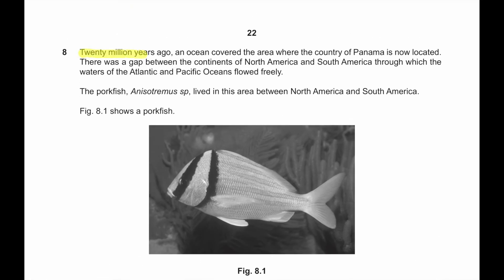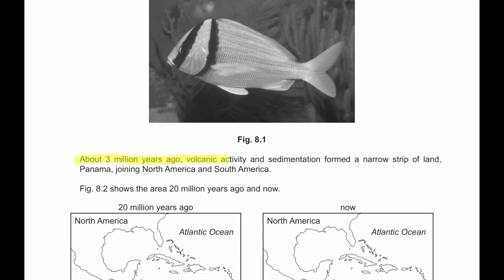Question number 8: About 20 million years ago, an ocean covered the area where the country of Panama is now located. There was a gap between the continents of North America and South America, through which the waters of the Atlantic and Pacific Ocean flowed freely. The porkfish, Anisotremus species, lived in this area between North America and South America. Figure 8.1 shows a porkfish.